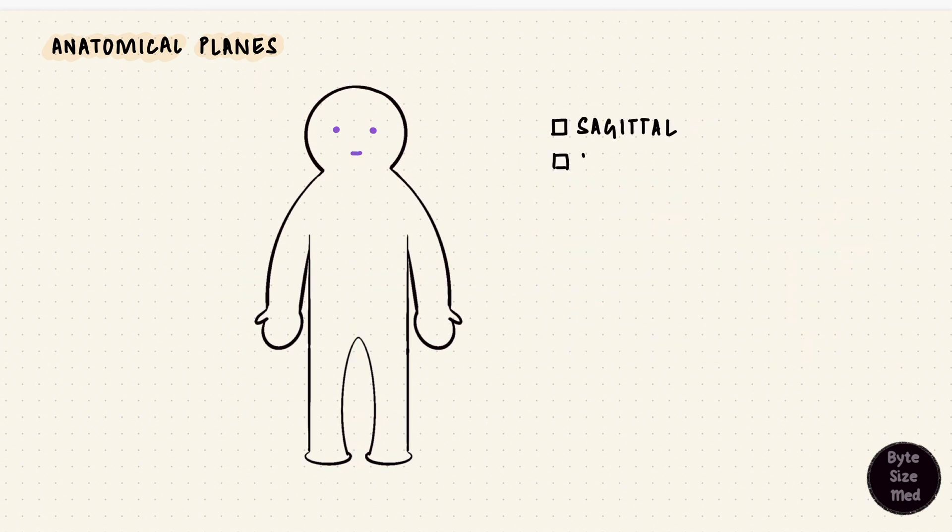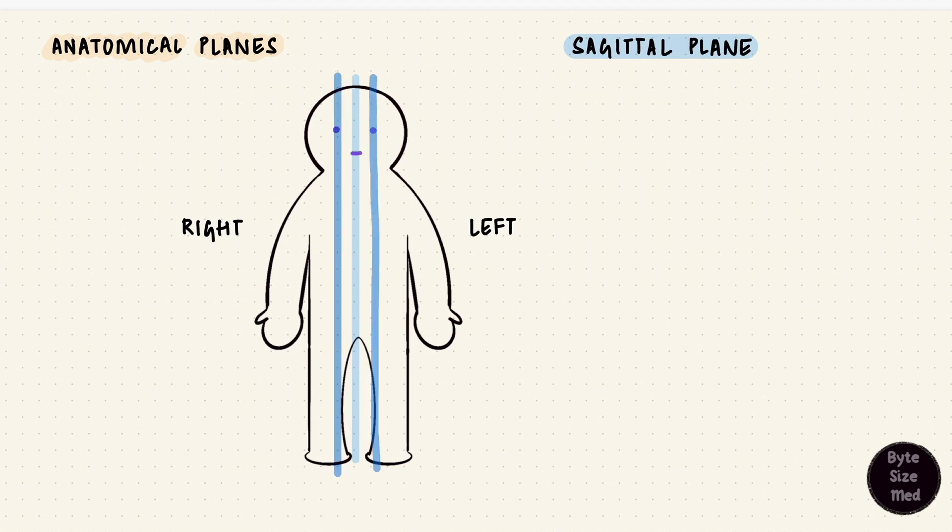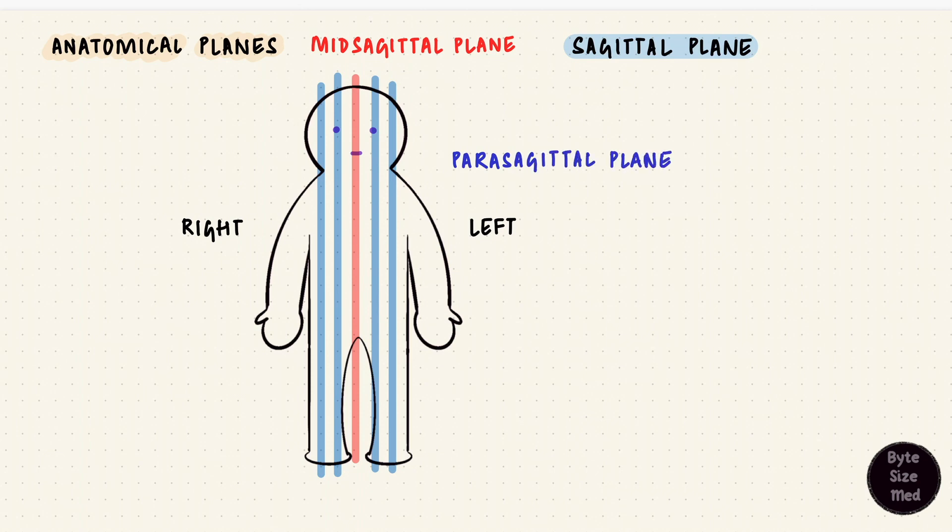The sagittal and coronal planes are vertical or longitudinal planes in the direction of head to toe. The sagittal plane splits the body into a right and a left portion. It doesn't have to be in the midline. Any plane going in this direction is sagittal. If it is in the midline, it's called the median plane, also called the mid-sagittal plane. The planes off-center are the parasagittal planes, but ultimately they're all sagittal planes.